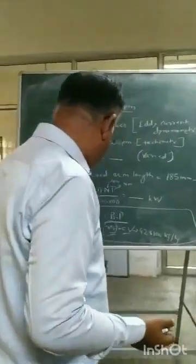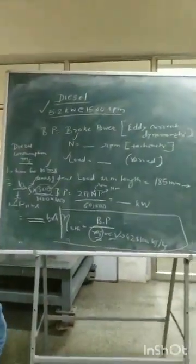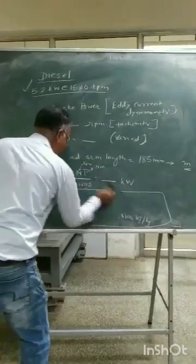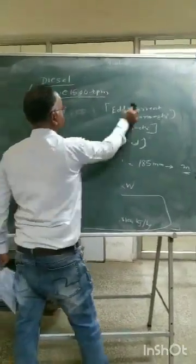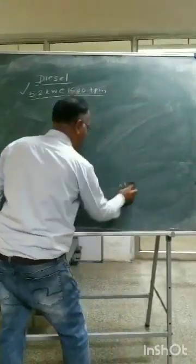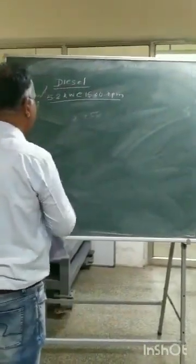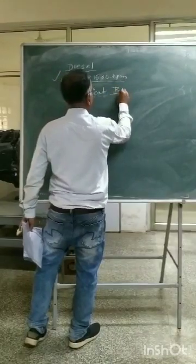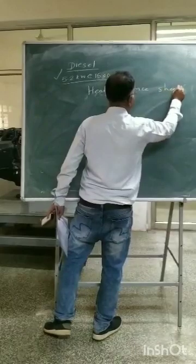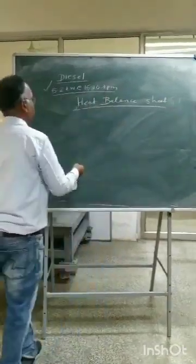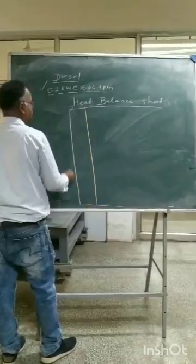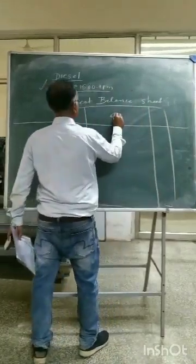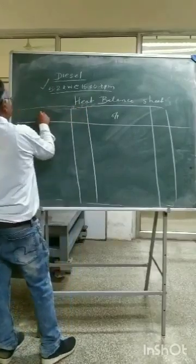For other parameters — especially if you are interested in knowing how energy is supplied to and utilized by the engine — we calculate what is known as the heat balance sheet. The heat balance sheet is just like a bank balance sheet, where you have a credit side and a debit side: what goes in as energy is the input side, and what goes out as energy is the output side.